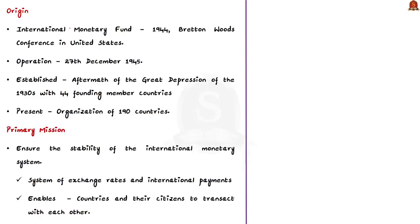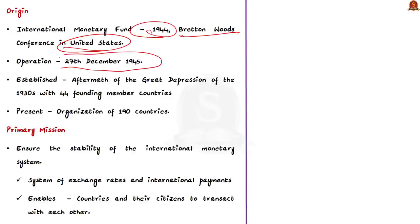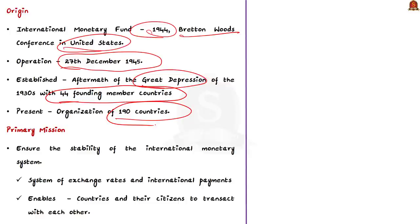The International Monetary Fund had its origin in 1944 through the Bretton Woods Conference held in the United States. It came into operation on 27th December 1945, established in the aftermath of the Great Depression of the 1930s which affected the entire world. During its founding, it had 44 member countries; at present it has over 190 countries.